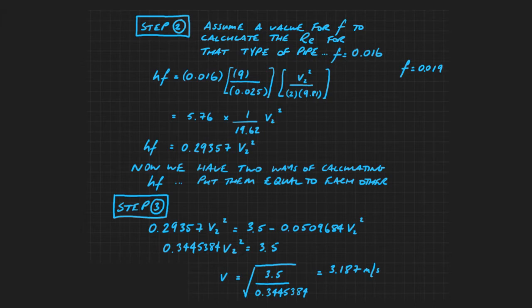In step two, we assume a value for the friction factor. We're going to assume this is 0.016. We're now going to plug that into the calculation for the frictional head loss. And we get a value for HF in terms of V squared.